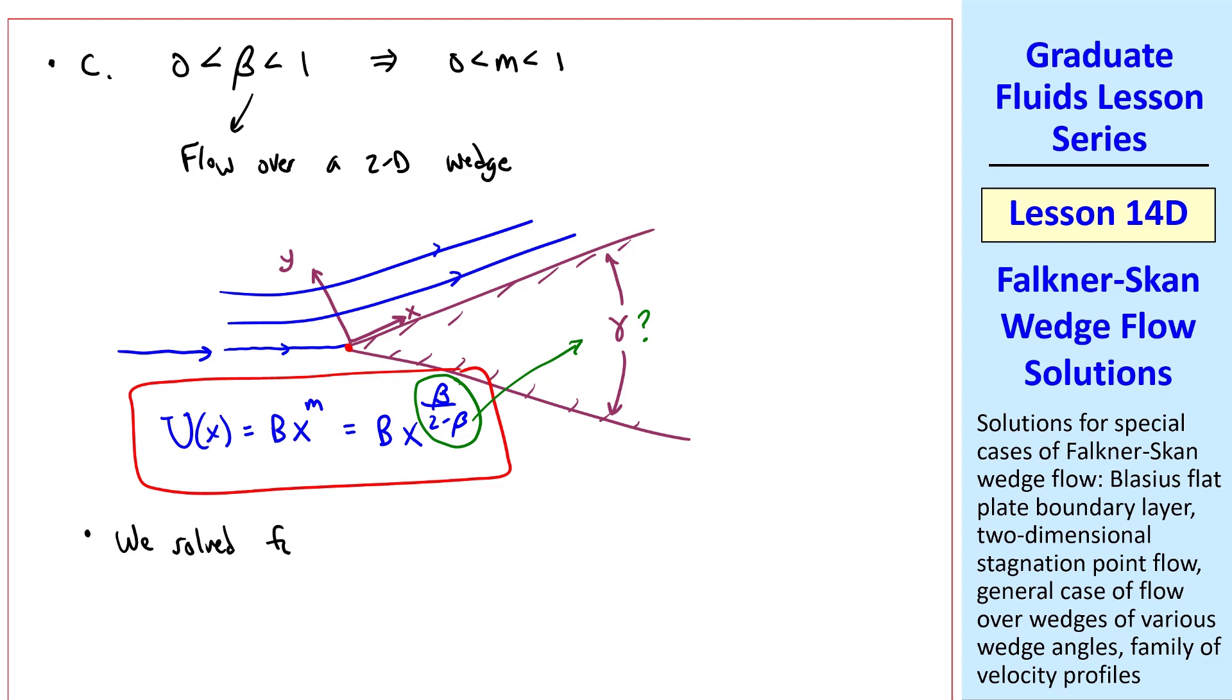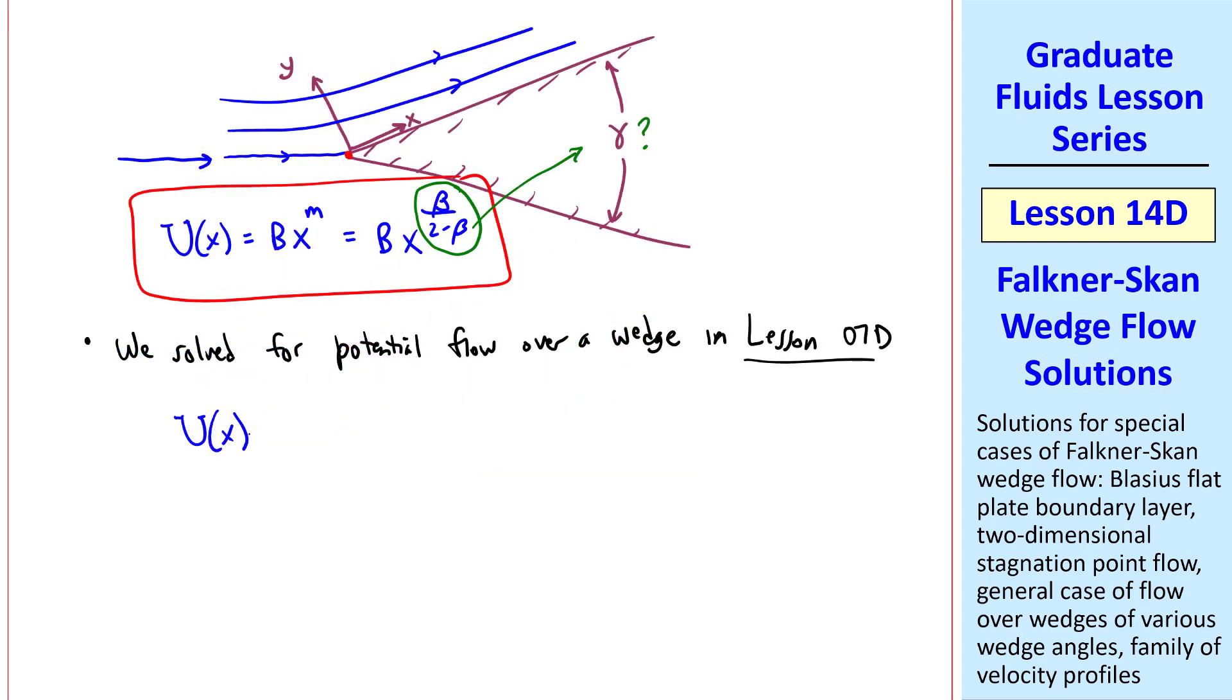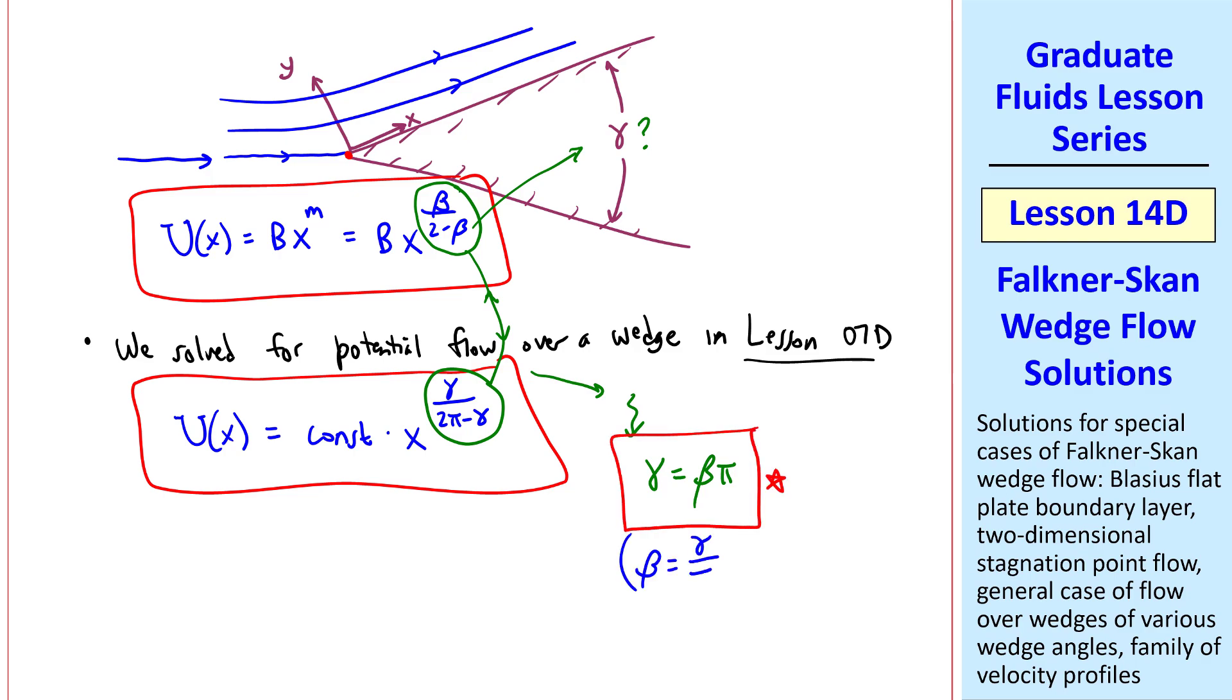Well, we solved for potential flow over a wedge in Lesson 7d. In that case, the irrotational outer flow was found to be some constant times x to the gamma over 2 pi minus gamma. So we can equate these two exponents. And after a little bit of algebra, you can show that gamma is beta times pi, or beta is gamma over pi. Thus, for a given wedge angle gamma, we can calculate beta and use that in our Falkner-Skan similarity equation.